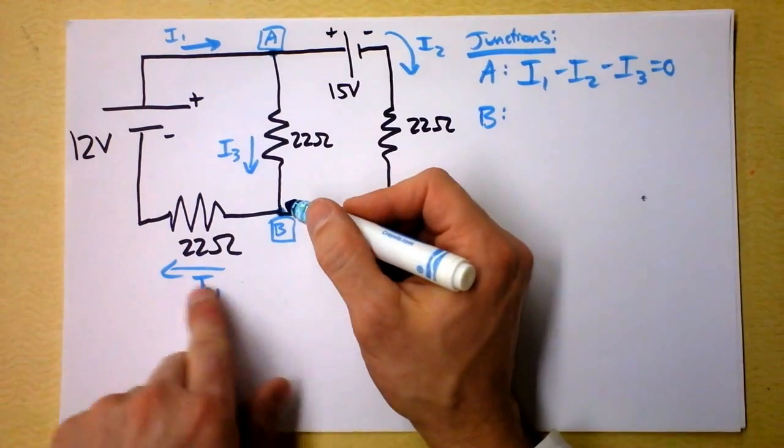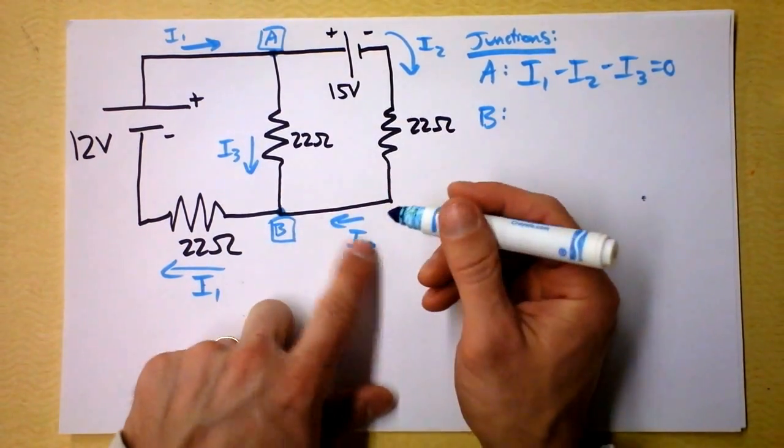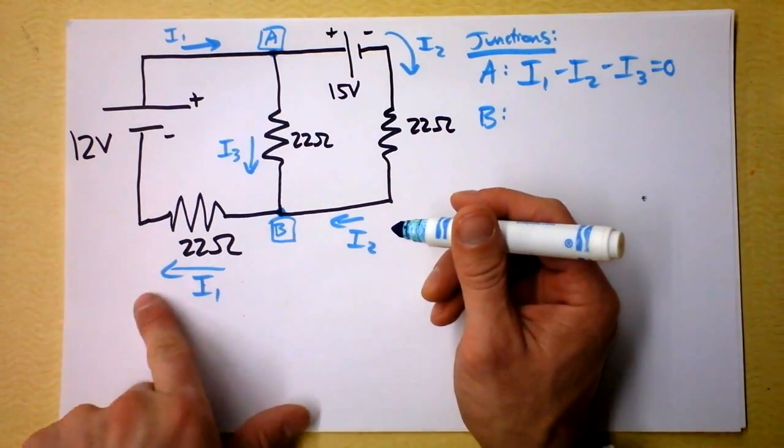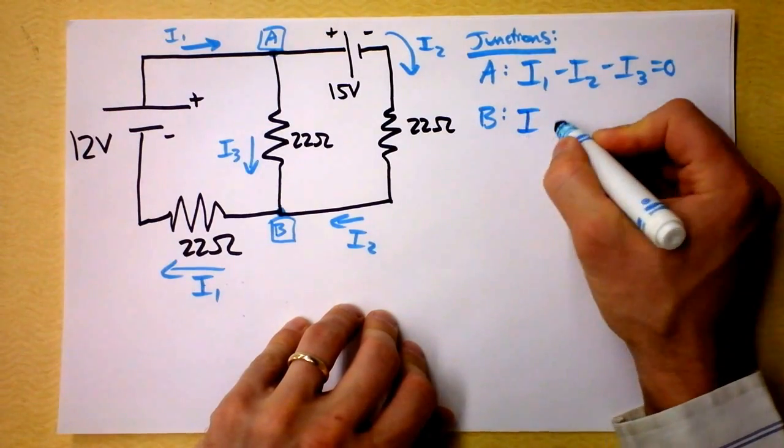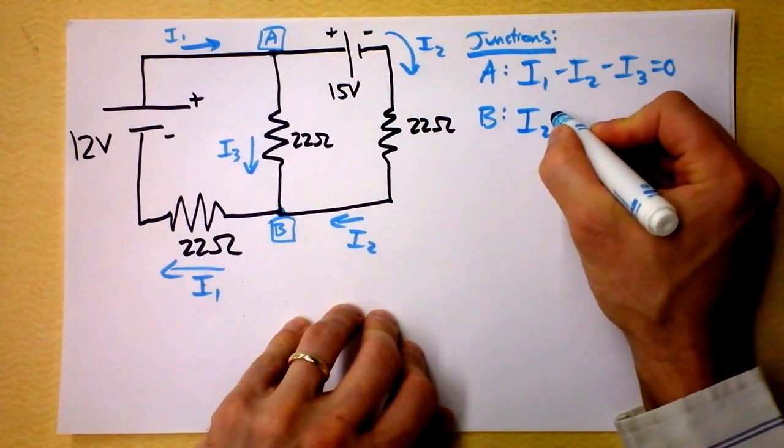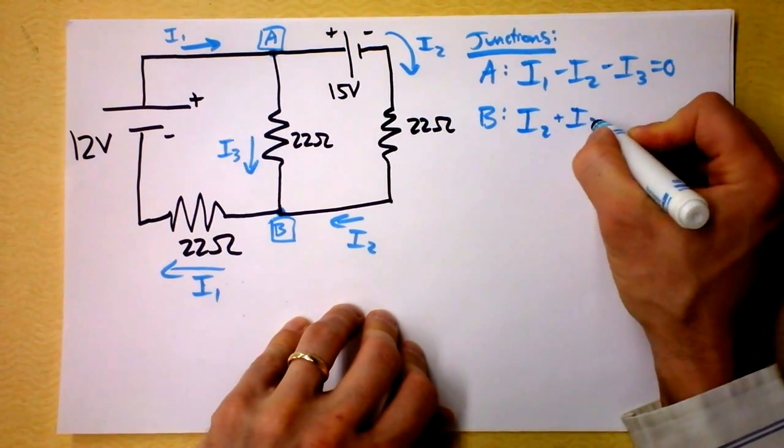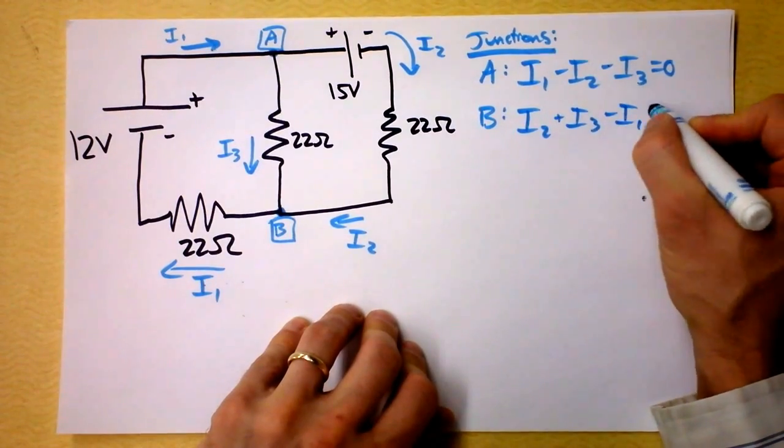And then at junction B I notice that current 2 and current 3 are going in and current 1 is coming out. So I say, well I say I2 plus I3 minus I1 equals 0.